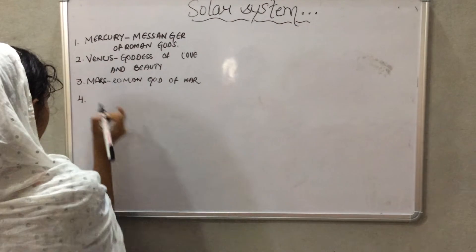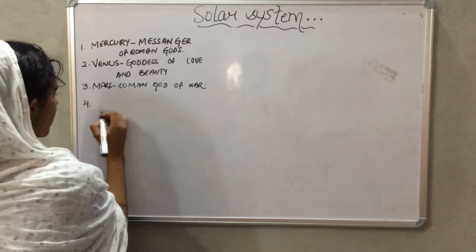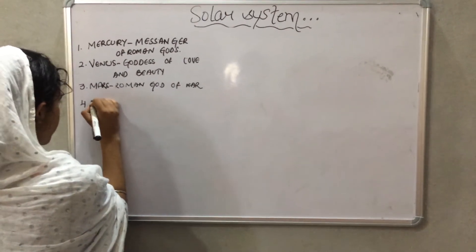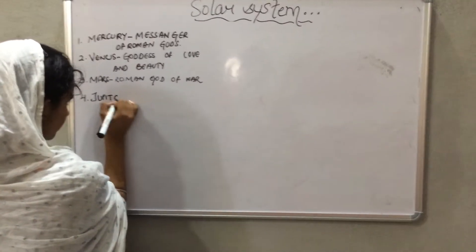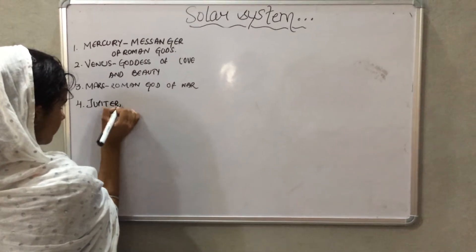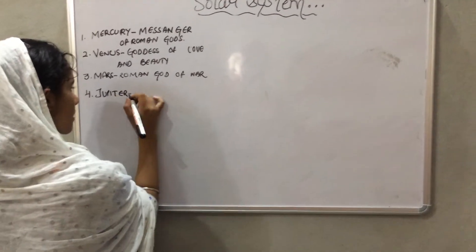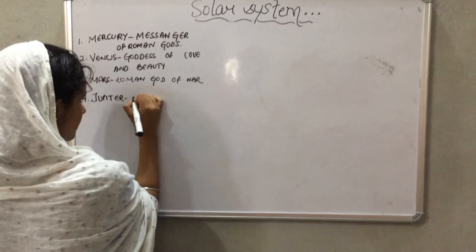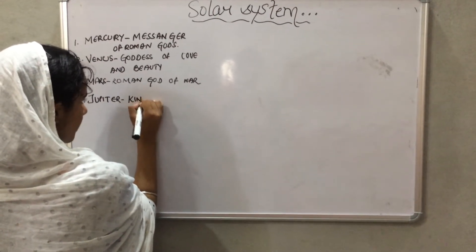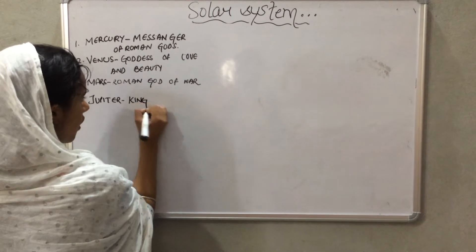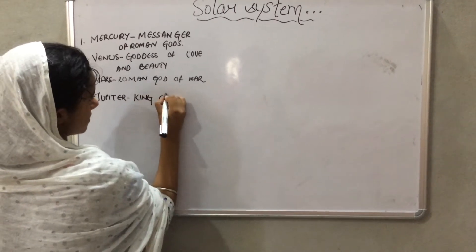Let's move to the fourth planet, that is Jupiter. It is named after the king of the gods.